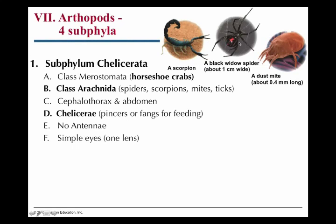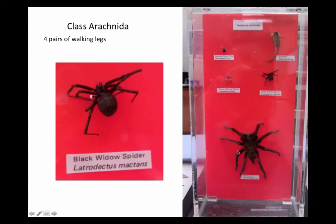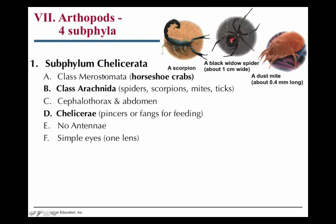The scorpion has four pairs of walking legs, the spider has four pairs, and even this dust mite has four pairs of walking legs. That's how you identify the Arachnida class. You can see all your spiders here — you don't need to know which specific ones. Know how to spell 'chelicerae' — those are their pinchers or fangs for feeding.